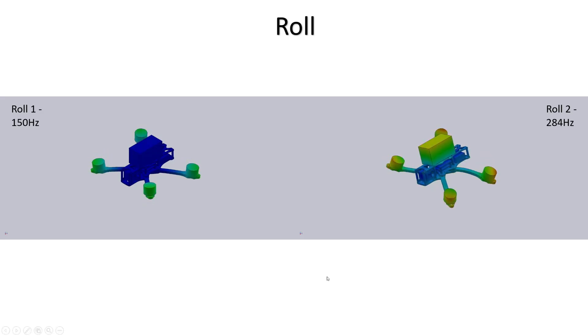There's also a second roll mode at 284 hertz. Now I couldn't find hardly any evidence of this in the spectrograph from the black box log. That really indicates that the frame is doing really well at not letting this resonant mode, which we know does exist because we can see it here, from affecting the gyro at all.